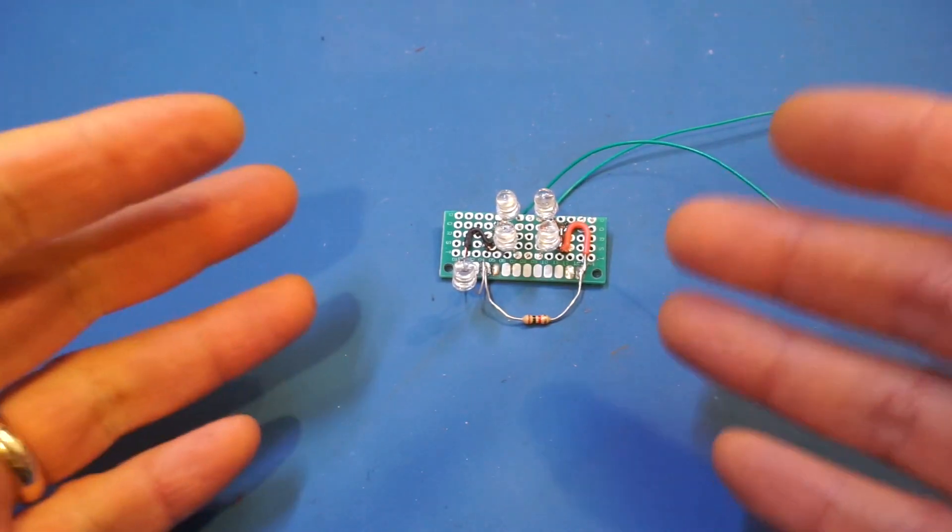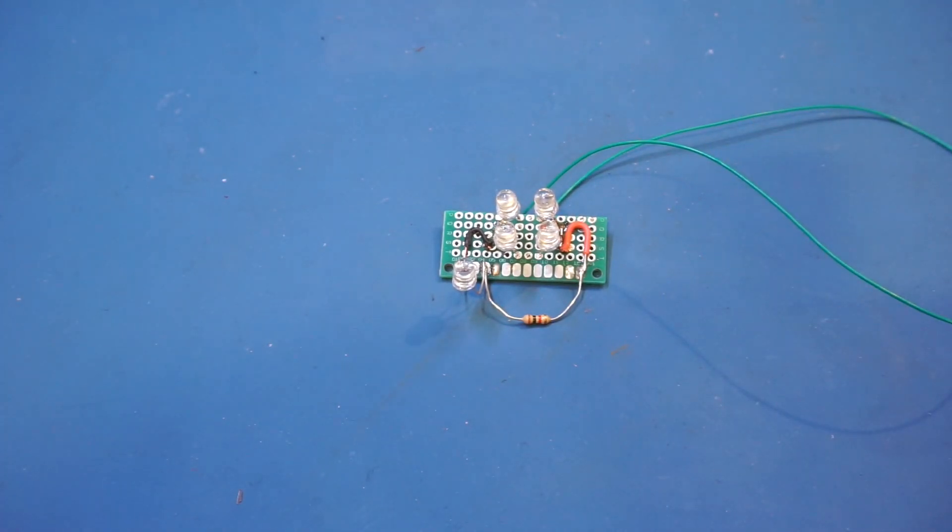Instead of using four regular diodes, I used four LEDs to build the diode bridge. You would typically never want to do this because LEDs are very inefficient for this purpose due to their high voltage drops and low reverse breakdown voltages, but it is a good way to see exactly how a bridge rectifier works.